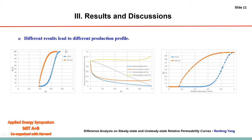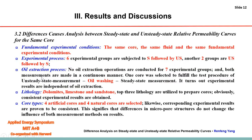Regarding the fundamental experimental conditions: we used the same core, the same fluid, and kept the same fundamental experimental conditions. For the experimental process, six experimental groups were subjected to steady-state followed by unsteady-state, and the other two groups were unsteady-state followed by steady-state. The experimental process is therefore not the main cause of the difference.